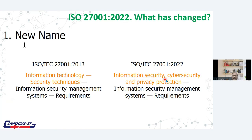The new name is: 'Information Security, Cybersecurity and Privacy Protection — Information Security Management System Requirements.' So you see that the name itself has been changed by adding information security, cybersecurity and privacy protection. This means the standard has been updated with new requirements like privacy and other things. This is the first change.